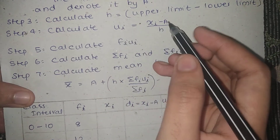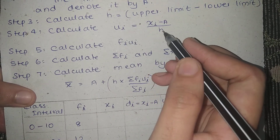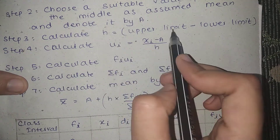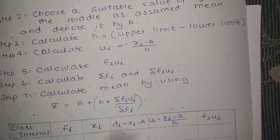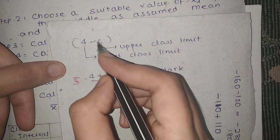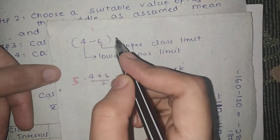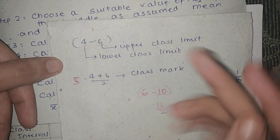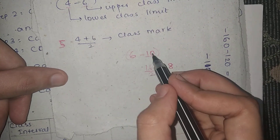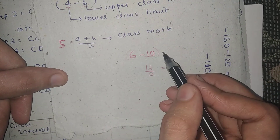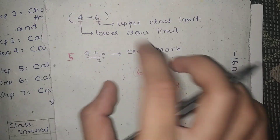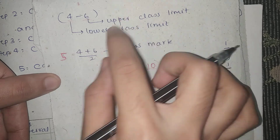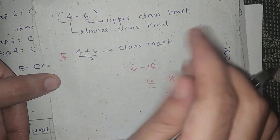ui is xi minus a divided by h. h is the class size. Class size is upper class limit minus lower class limit. For example, this class size is 10 minus 6, and 10 minus 6 gives 4. Upper class limit minus lower class limit — that is the class size.